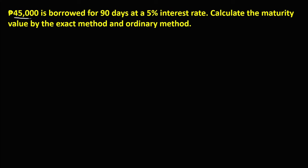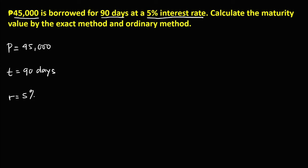45,000 pesos is the principal amount, so P equals 45,000. Then, 90 days is the time. And 5% is the interest rate. Convert this to decimal by dividing by 100, so 5 divided by 100 equals 0.05.